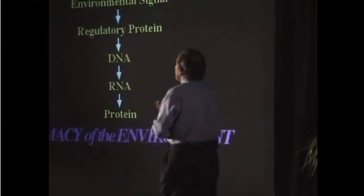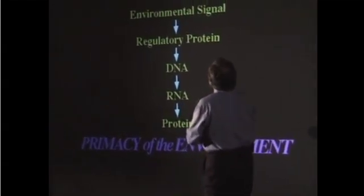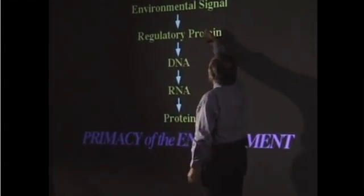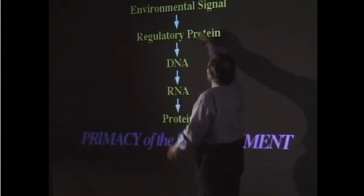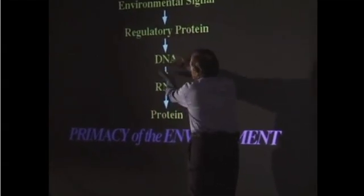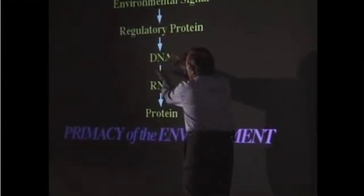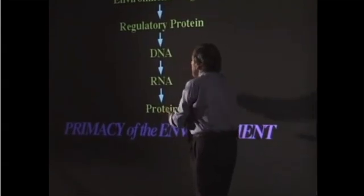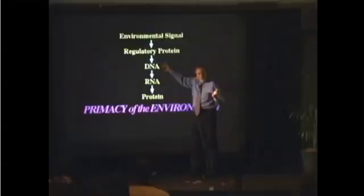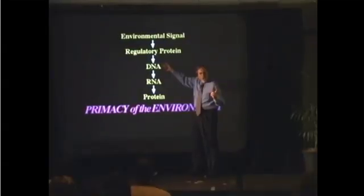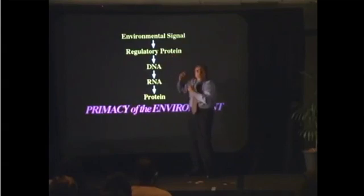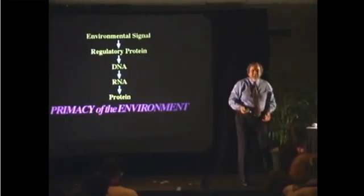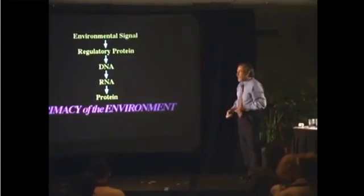The environmental signal comes in and changes the shape of the regulatory protein, which removes the sleeve and exposes the DNA so I can make my proteins. So rather than the primacy of DNA, which is conventional thought, it's actually the primacy of the environment. It's the environment that selects your genes, not the genes themselves.